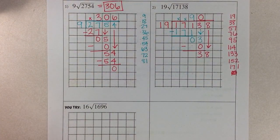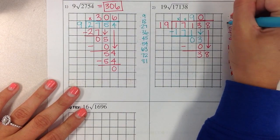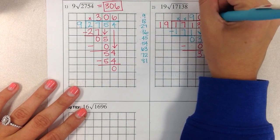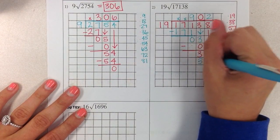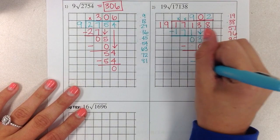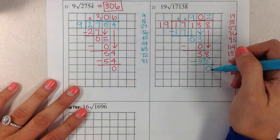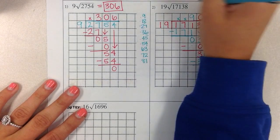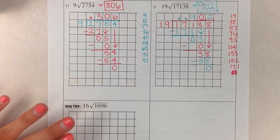Alright, now we're going back to step 1. 38 divided by 19, how many times does it go into 38? It goes in 2 times exactly. So we put 2 in our quotient. Multiply, 19 times 2 is 38. Step 3 is to subtract. 38 minus 38 is 0. We have a remainder of 0, we have nothing to bring down. So that tells us that our quotient, our answer is 902.